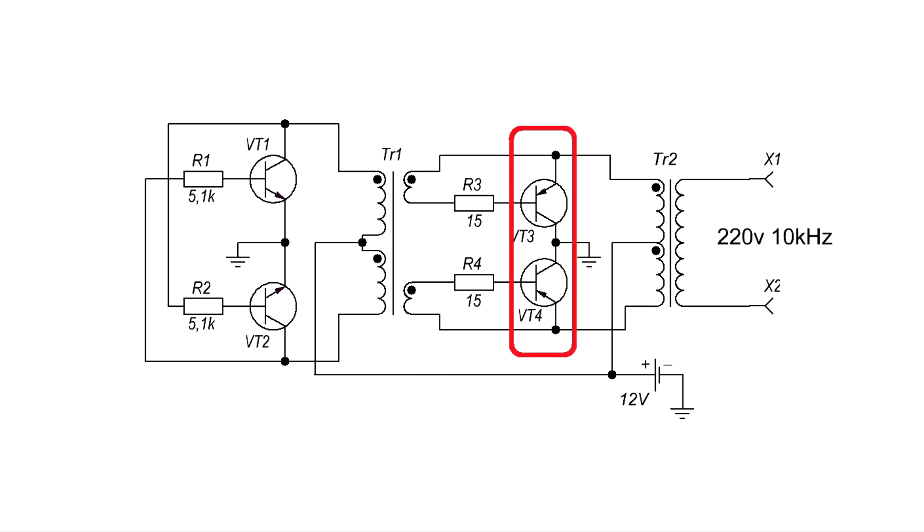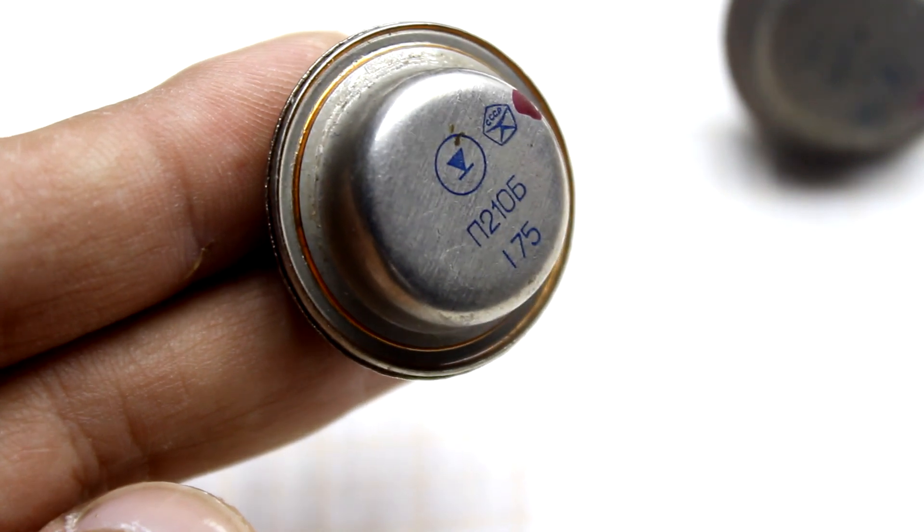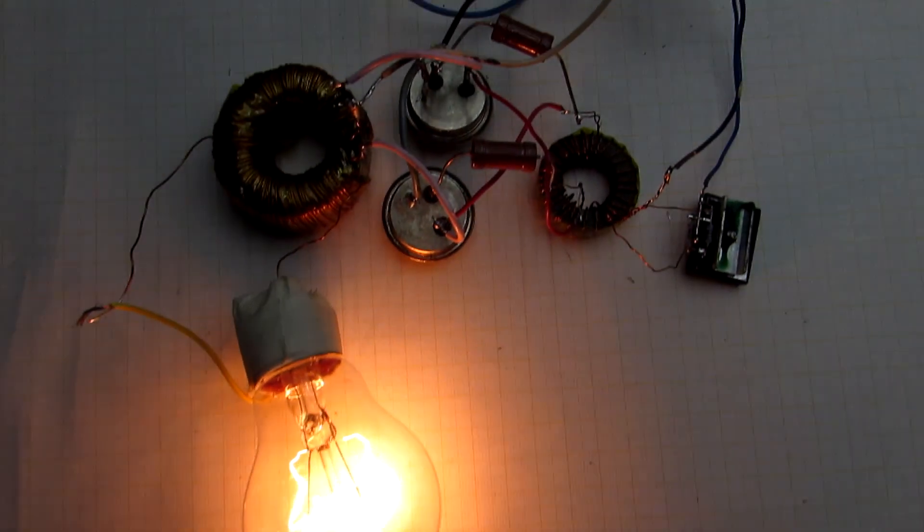But bipolar PNP transistors, which are used here as power switches, can't commute large current, so there isn't much power output. It's only about 50W.